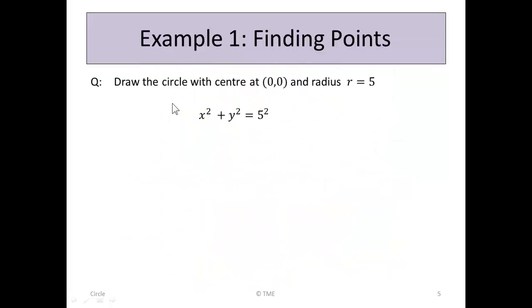Example: You're asked to draw the circle with centre at origin (0,0) and radius r = 5. So we know that the formula is x squared plus y squared equals 5 squared. But how would you draw the points or establish the points? Well, we'll start by rearranging the equation x squared plus y squared equals 5 squared into one with just one variable on the left-hand side.